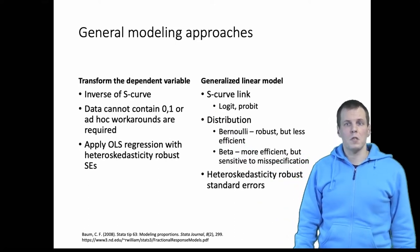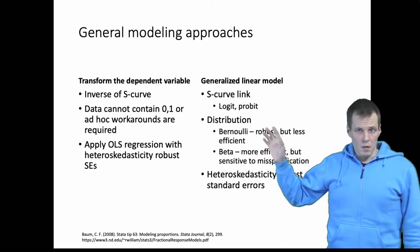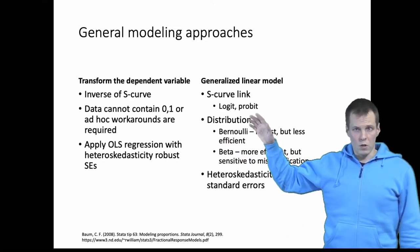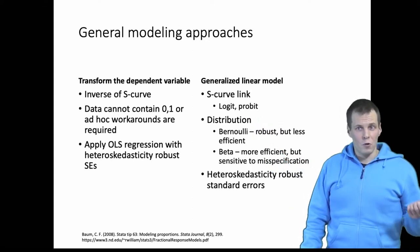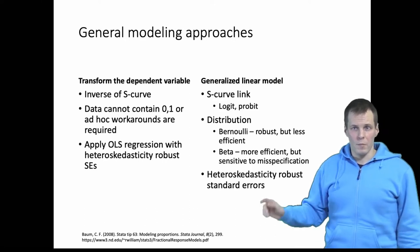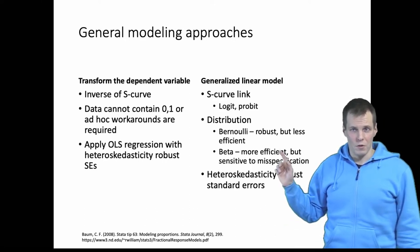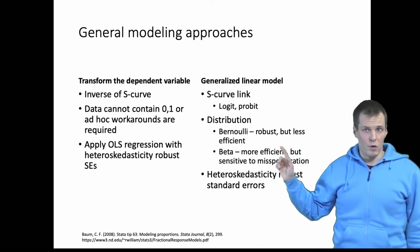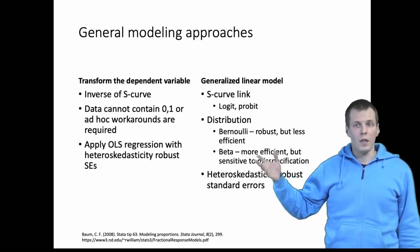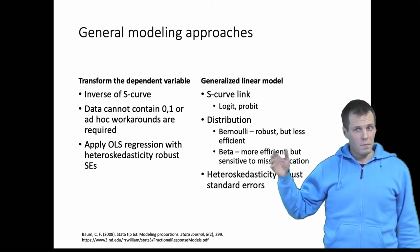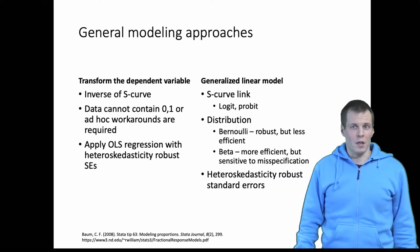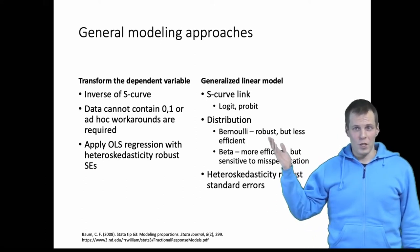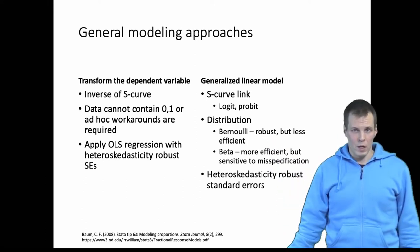Another approach is to use the generalized linear model. We use either logit or probit or some other Esker, and we have two commonly used distributions. One is the Bernoulli distribution — the logistic and probit regression distribution, which is normally for ones and zeros only, but it actually works pretty well for fractional responses as well.